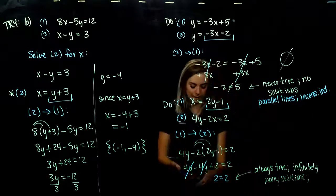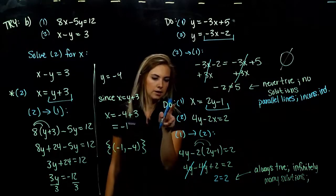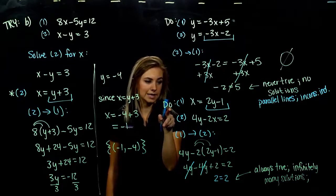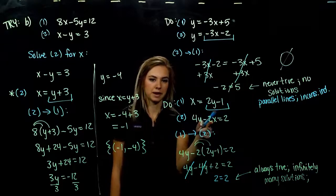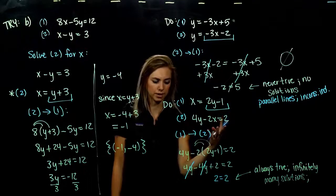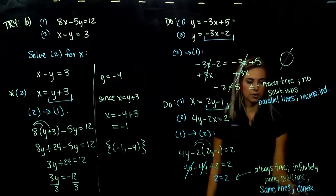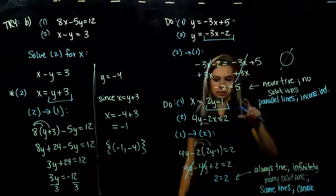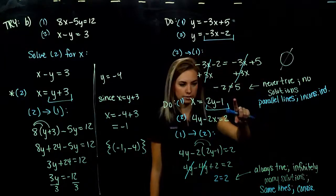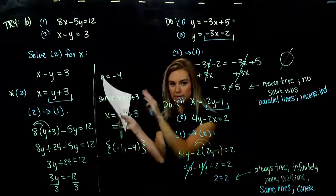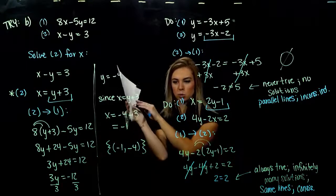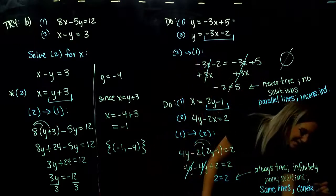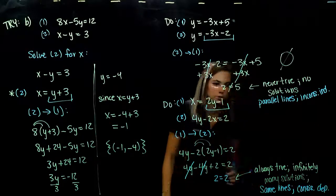What kind of system are we looking at, and how are these two lines related? They are the exact same thing — just multiplied by a constant with some rearranging. We have a solution, so our first descriptor is that it's consistent. And since these two lines are the same, they are dependent on each other. Whatever I plug into one, the exact same thing happens in the other. We have a consistent, dependent system.